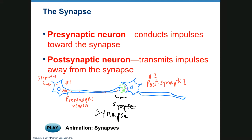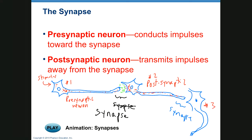Neuron number two, the postsynaptic neuron, experiences a graded potential which may or may not lead to an action potential. The action potential then travels down to a second synapse. At synapse number two, neuron two becomes the presynaptic neuron and neuron three is the postsynaptic neuron. A synapse consists of a place where two neurons meet — one releases the neurotransmitter, the other has the receptors.